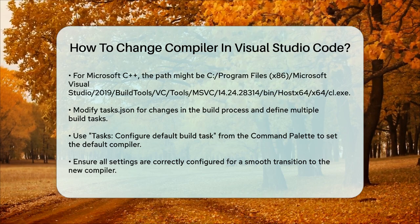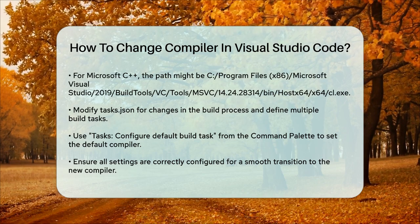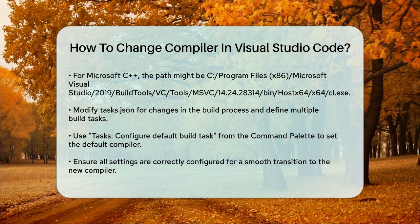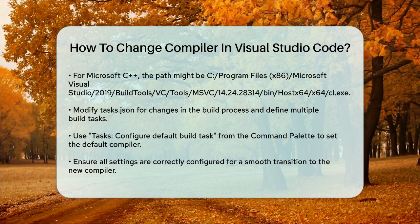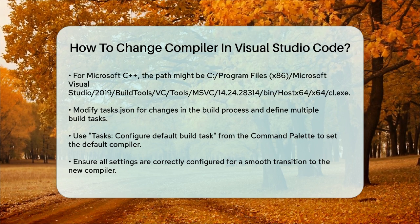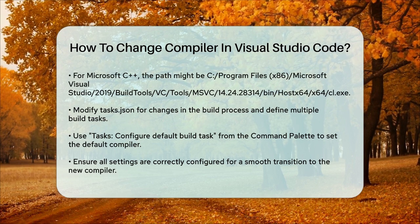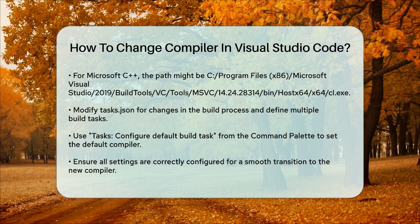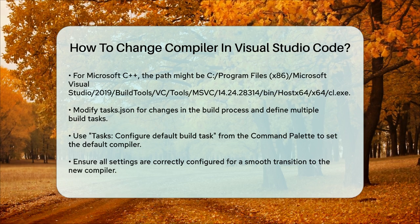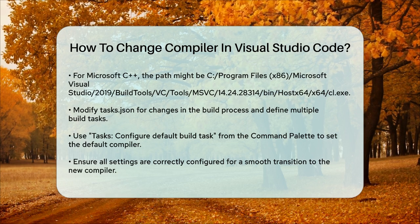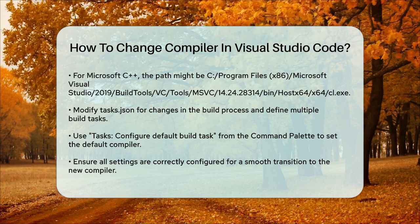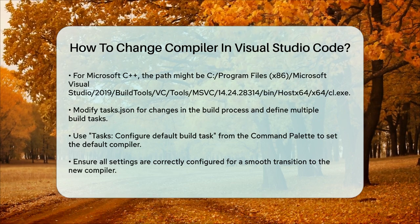In summary, changing the compiler in Visual Studio Code involves editing the c_cpp_properties.json file or using the C/C++ configuration UI to update the compiler path and other relevant settings. Additionally, you might need to adjust your build tasks in the tasks.json file to ensure everything works smoothly with your new compiler.